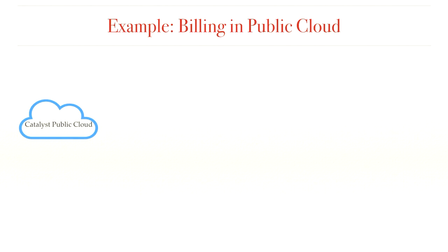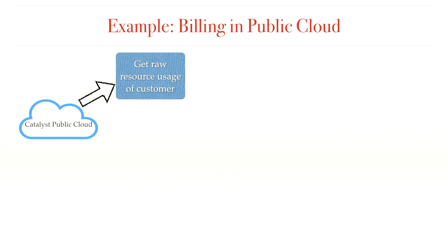In Catalyst, we are running a public cloud containing a range of services — cloud computing, block storage, object storage, and so on. Everything in our cloud is metered and follows a pay-as-you-go model. So we have a billing service to track resource usage and charge our customers. The first thing our billing service does is get the resource usage of each customer. Because we run the service every month, there may be tens of thousands of samples, so the first step is data transformation.